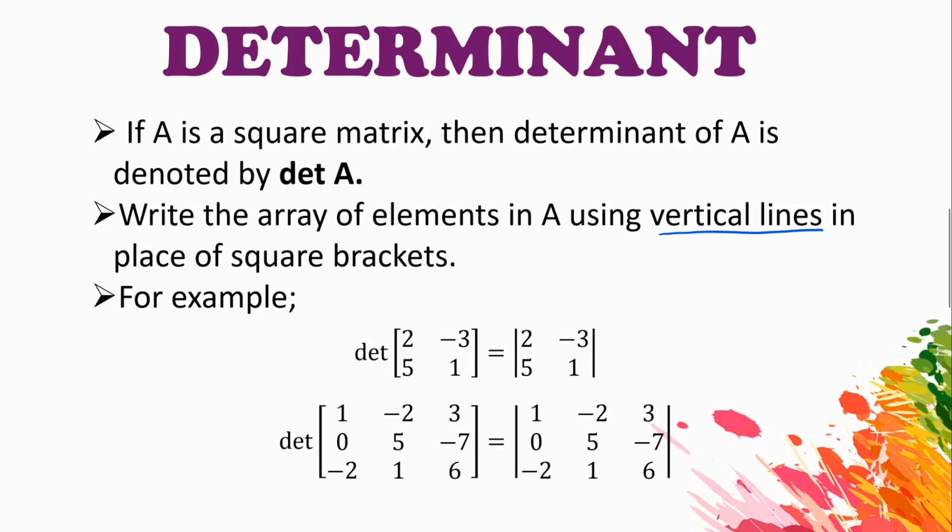For example, determinant of the 2x2 matrix [2, -3; 5, 1] can also be written as the same elements inside these vertical lines. Same goes to 3x3 matrix—the determinant for this matrix can also be written as the same elements inside these vertical line brackets.